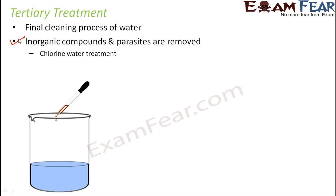Care should be taken that excess chlorine should not be added, because chlorine is poisonous and can be harmful to the water quality. If you add too much chlorine, the water itself becomes poisonous, and then if you dispose that water into a river or an ocean, it might harm the aquatic life.